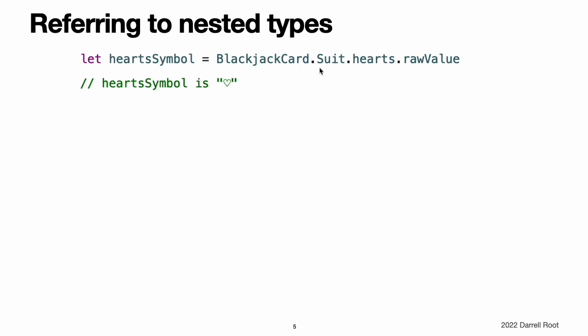In this example, this enables the names of Suit, Rank, and Values to be kept deliberately short because their names are naturally qualified by the context in which they are defined.